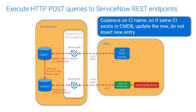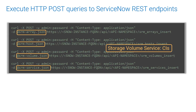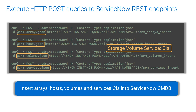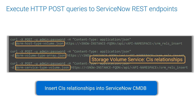ServiceNow incidents are opened, updated, or closed when an HTTP POST query is run by the SRM alerting backend. In this example, SRM inserts storage volume service CIs into ServiceNow CMDB by posting their respective JSON files. Similar commands are used to insert storage volume service CI relationships into ServiceNow CMDB.